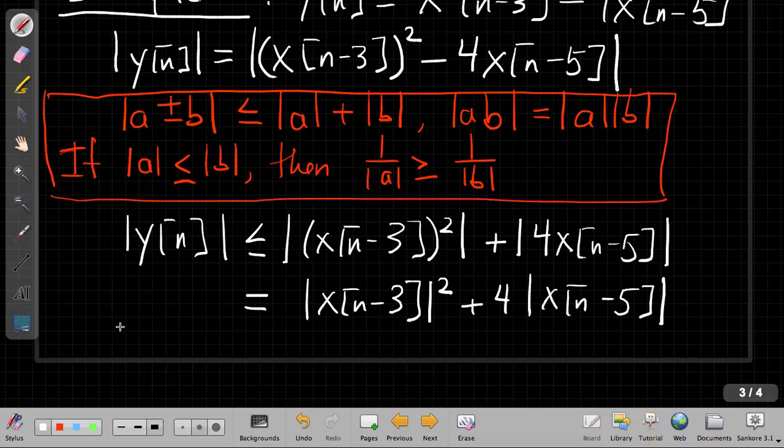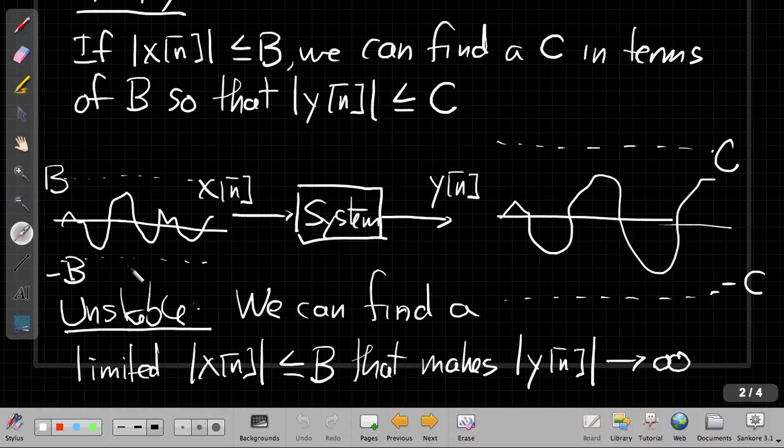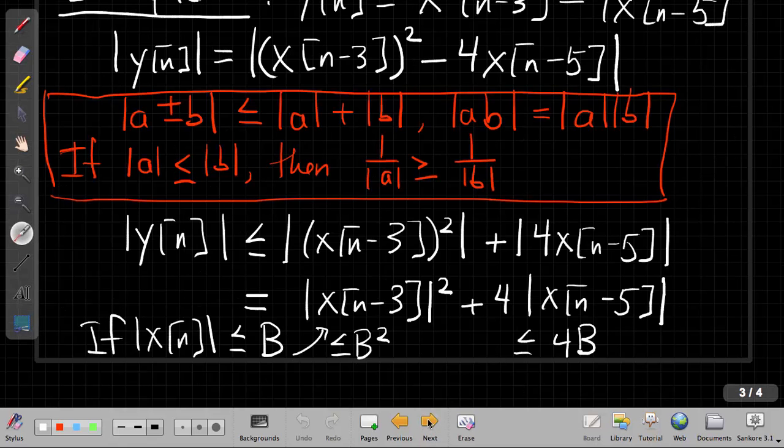If there is a limit on the input amplitude. So if the magnitude of x[n] is less than or equal to some constant b, then I can put that in here and say, well, this thing will be less than b squared, and this will be less than or equal to 4b. That's worth pointing out. The time shifts in here don't really matter. If I take a time signal and I delay it by three or delay it by five, if it's less than b everywhere, it's still going to be less than b. If this thing is all inside plus or minus b here, and then I delay it by three or delay it by five, I'm still always inside plus or minus b. So that hasn't changed anything there.